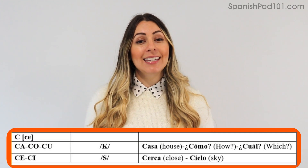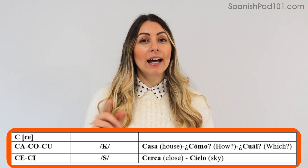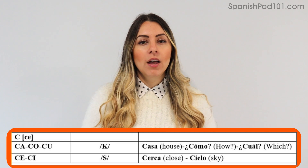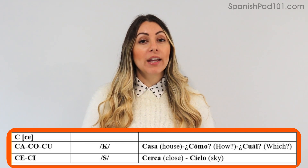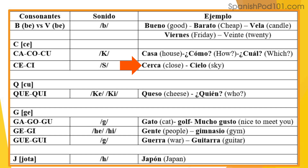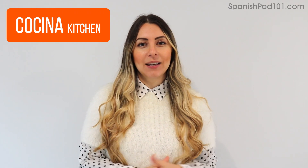Remember: ca, co, cu — and se, si. Be careful if you are Italian, because you might tend to say 'che, chi' as in Italian. In Spanish we don't say it like that — it's always an S sound for C-E and C-I. So cocina, not cochina.